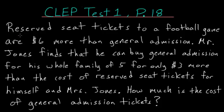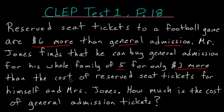This word problem says that reserved seat tickets to a football game are six dollars more than general admission tickets, and Mr. Jones finds that he can buy general admission for his whole family of five for only three dollars more than the cost of reserved seat tickets for himself and Mrs. Jones. How much is the cost of general admission tickets?